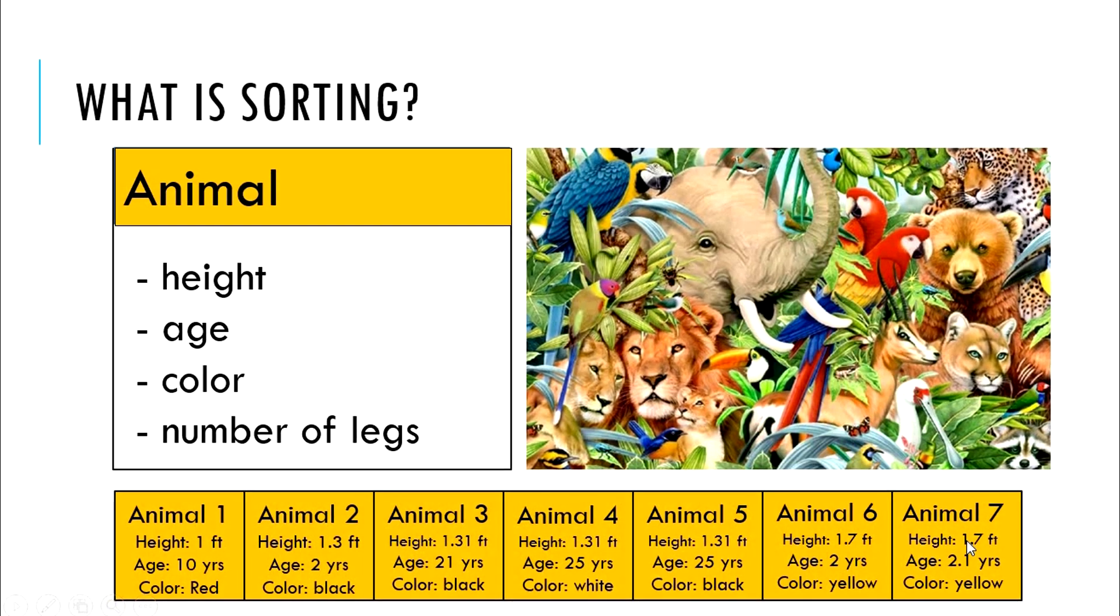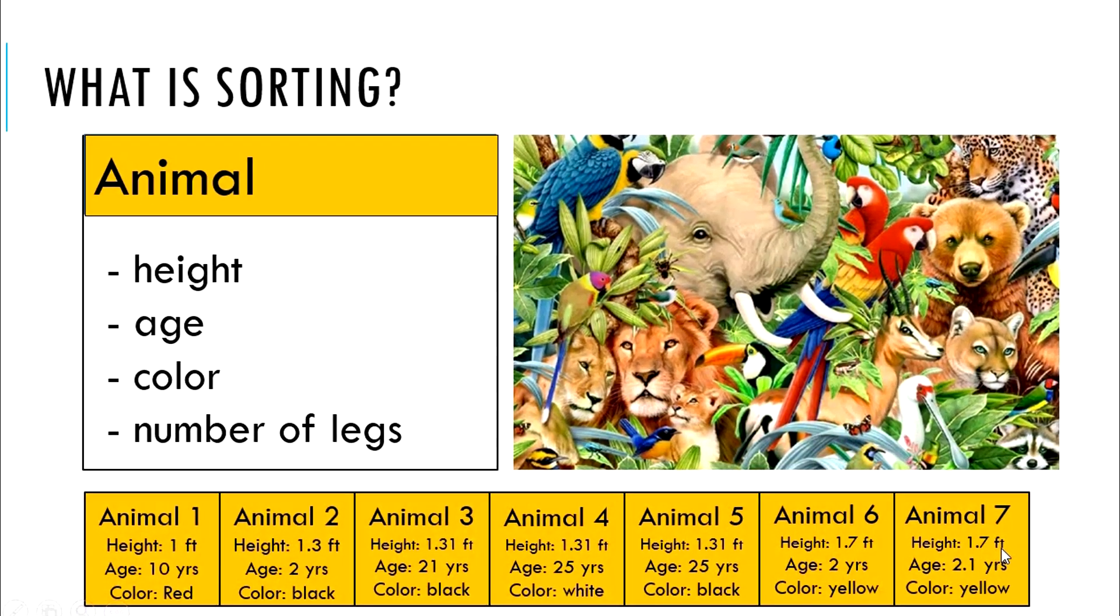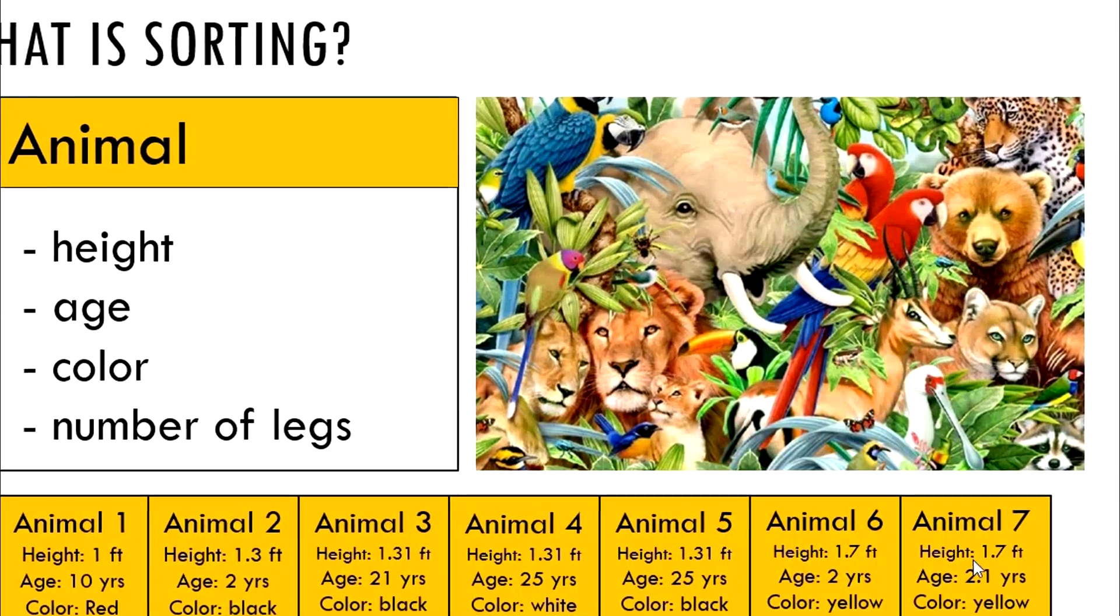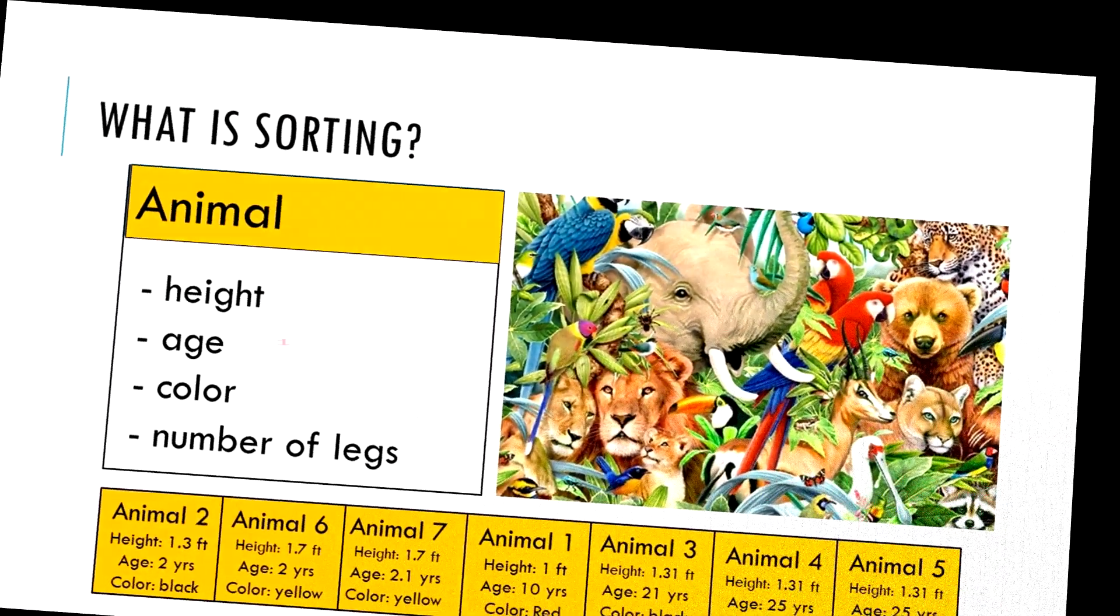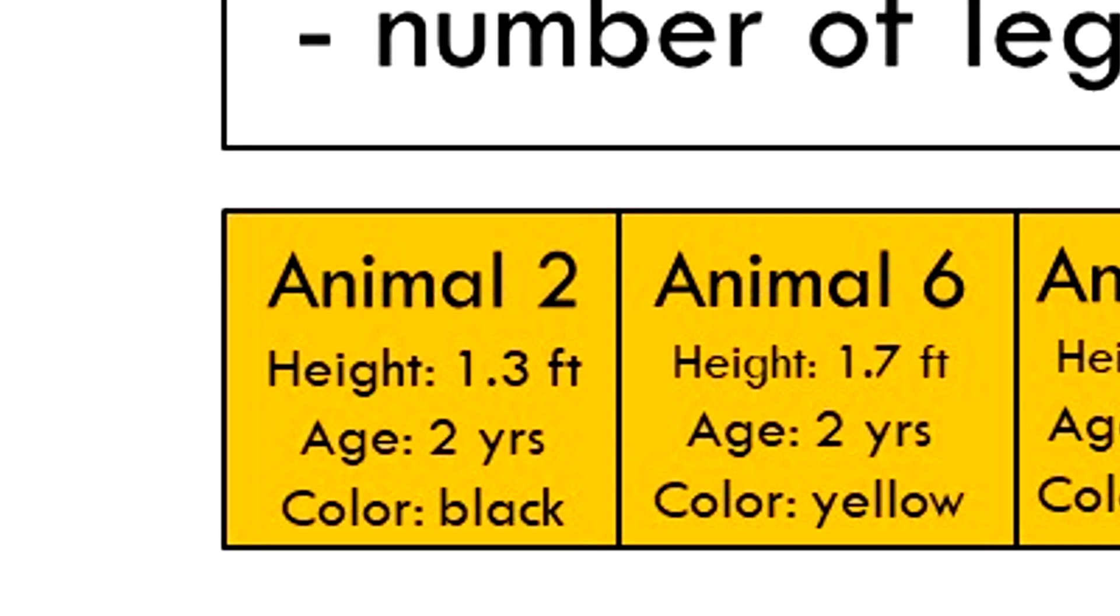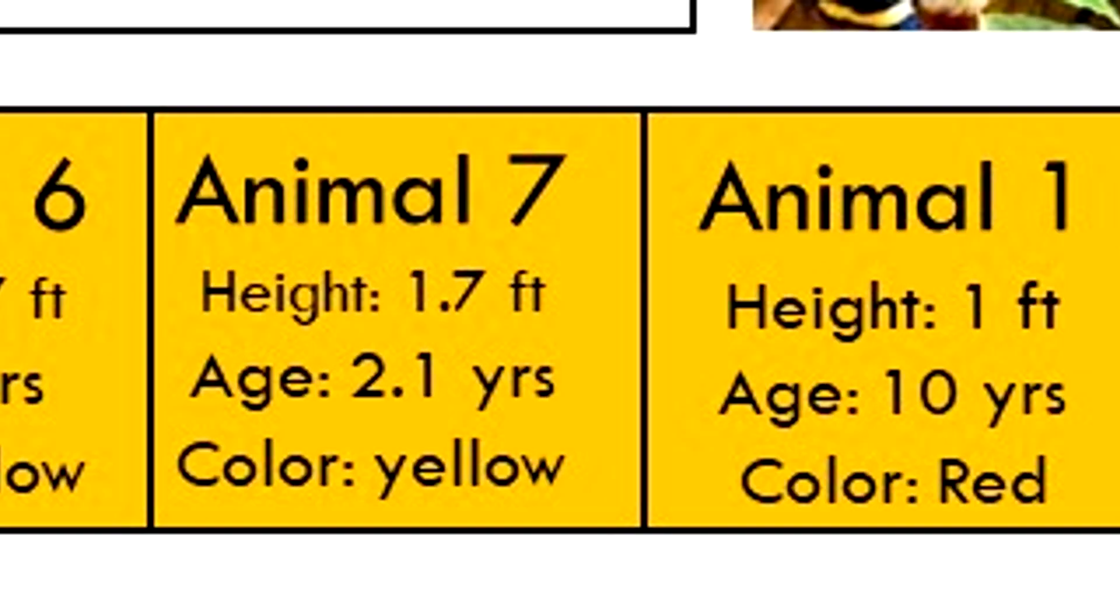Well, this is one way to sort the list of animals. We would get a different sorting result if the sorting criteria was changed. For example, if age in ascending order was the first sorting criteria, and height in ascending order was the next sorting criteria, we would get this result. Animal 2 and animal 6 would have been the first two elements in the list, as both their ages are 2 years. Animal 7 would have been the third element in the list, with the age of 2.1 years.